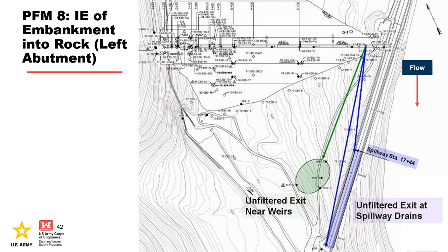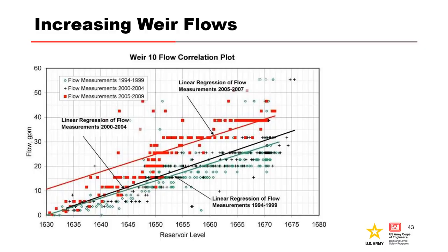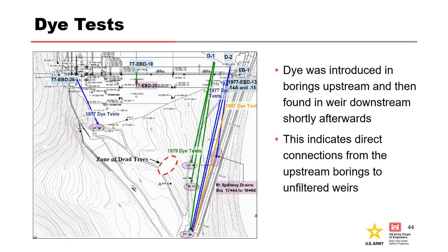During construction, springs were encountered both upstream and downstream of the dam centerline, and drains were placed to allow seepage from the springs to exit the foundation. Left abutment weirs 5, 7, and 10 showed increasing flow trends correlated with pool, suggesting a worsening condition, perhaps the erosion of soil infilling from the karst foundation. Dye tests in the left abutment showed direct connections from borings upstream to unfiltered weirs downstream, with dye introduced upstream found in the weirs shortly afterwards.